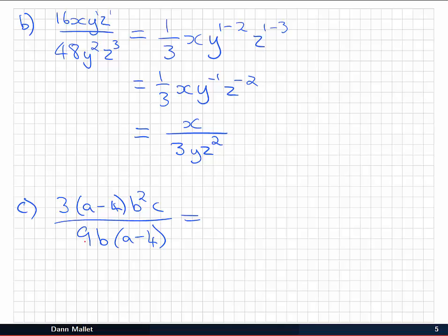First of all, notice we've got a 3 on the top and a 9 on the bottom. We can cancel the 3 there and one of the 3s which is a factor of 9, to leave us with a 3 on the bottom. We've also got a b on the bottom and b² on the top. We can cancel one of those, leaving us with b to the 1.